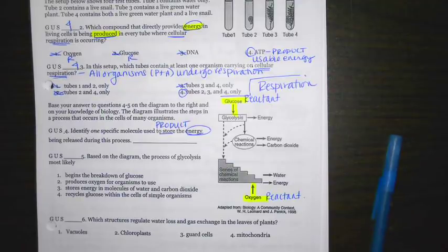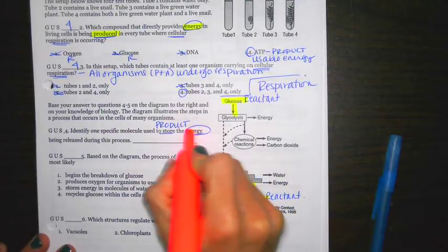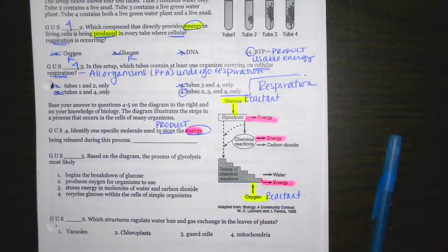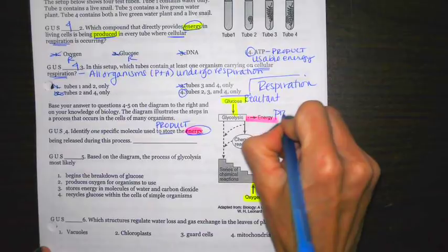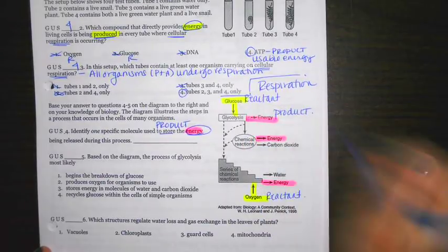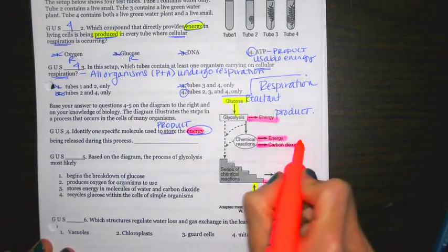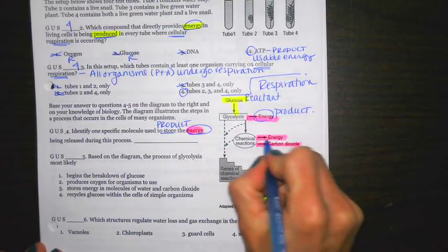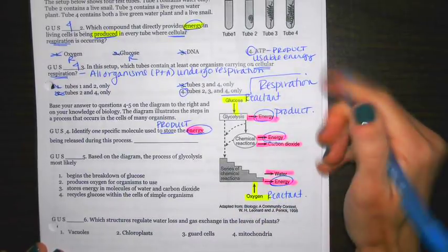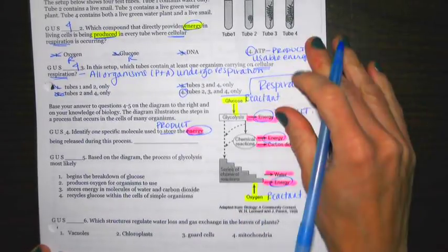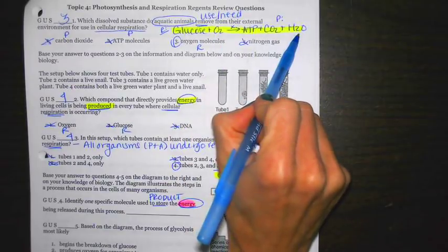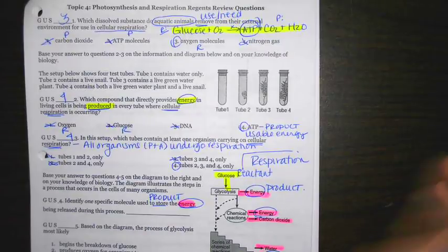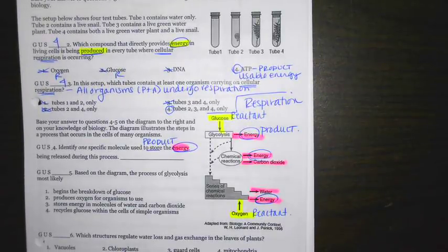Next up, note what's coming out. They want to know what the energy is. Here I have an energy molecule. Anything that's pointing out is going to be a product. Same thing with the carbon dioxide and the water. But they want to know, what is this energy molecule? Well, I know that it's respiration. So once again, if I go up to this diagram here, the usable energy in that is going to be my ATP. So that's the answer for number four, ATP.